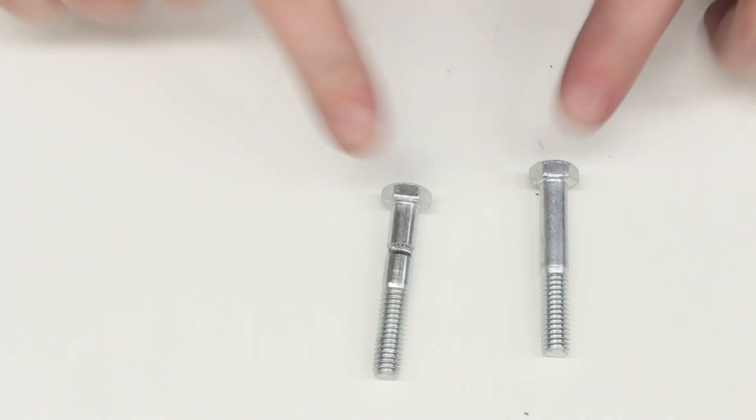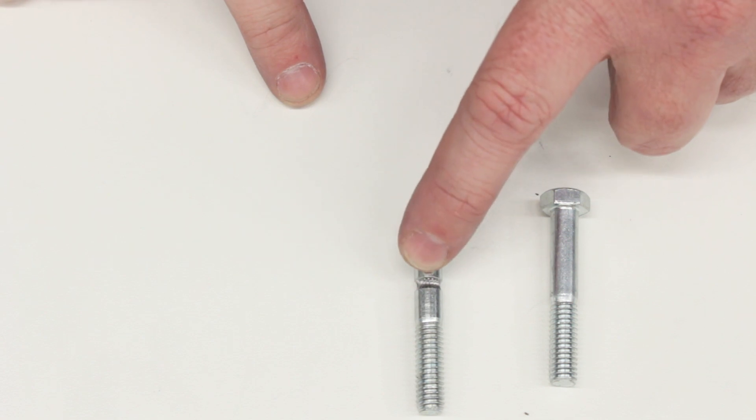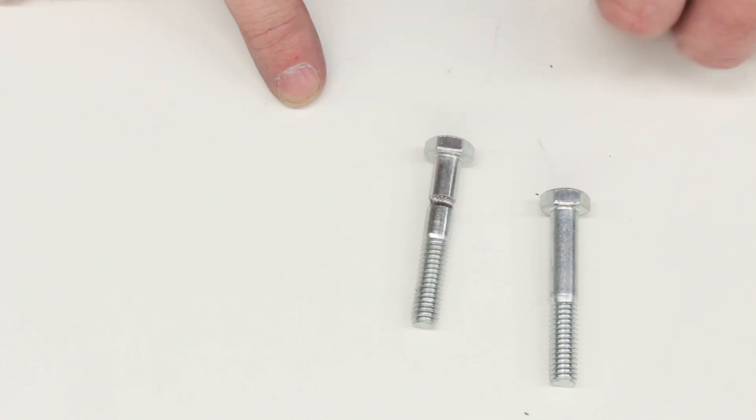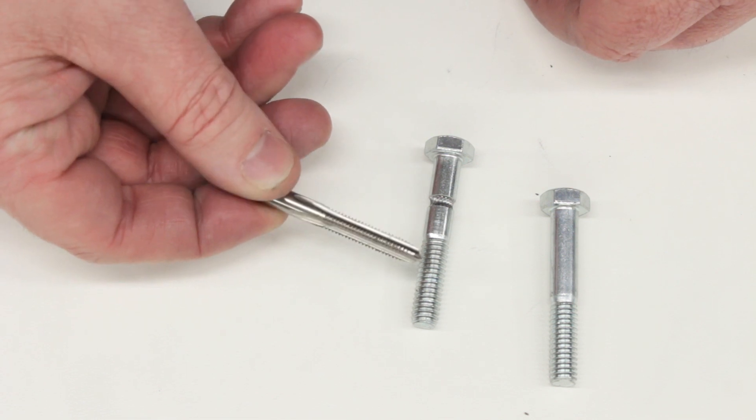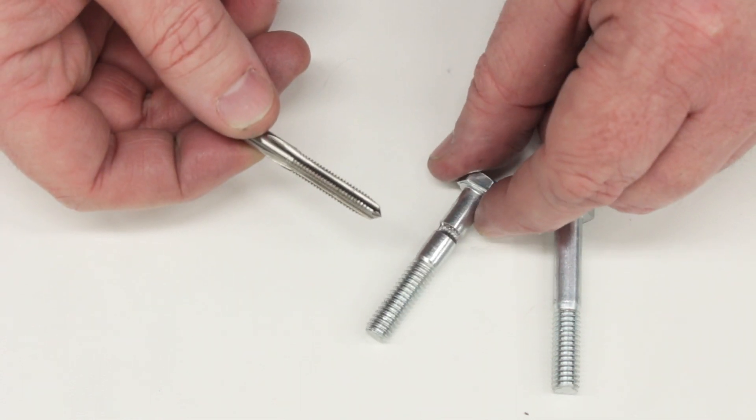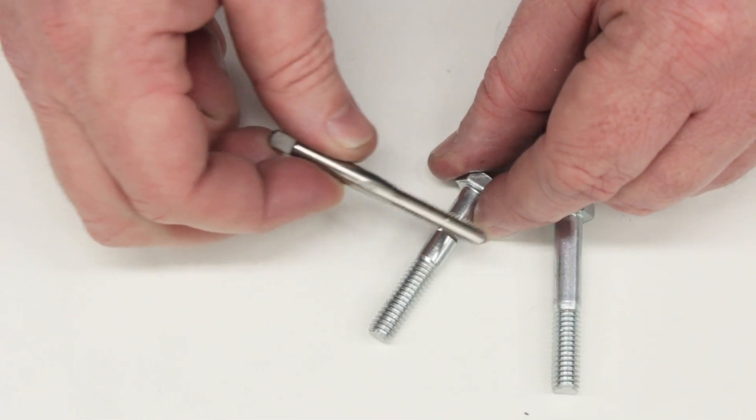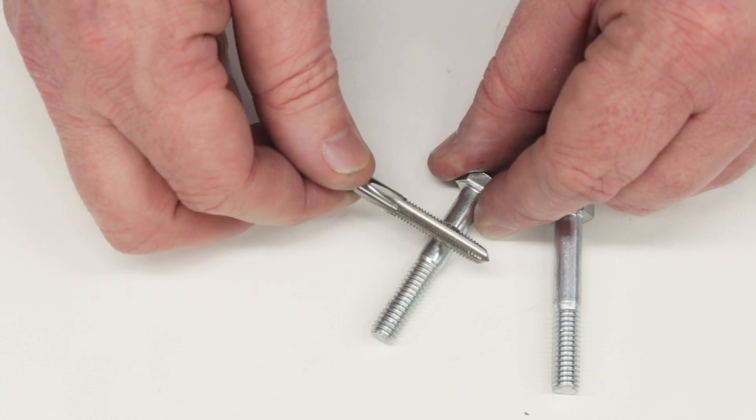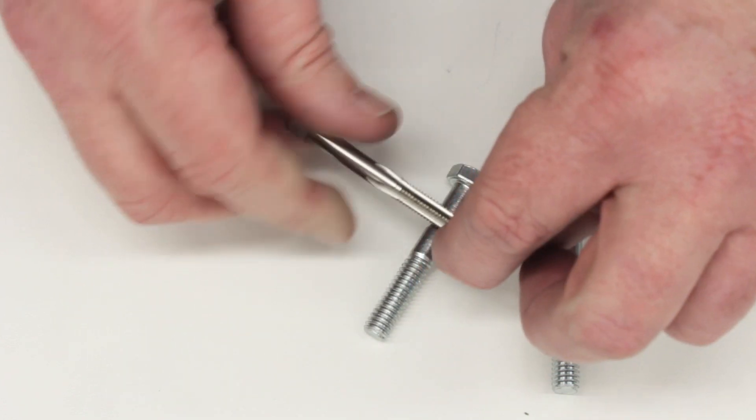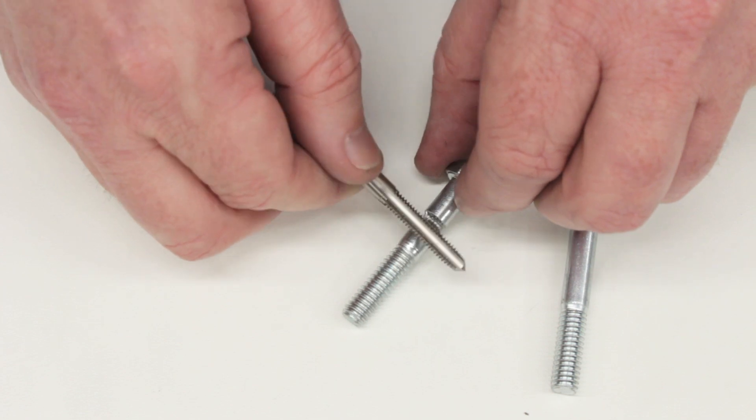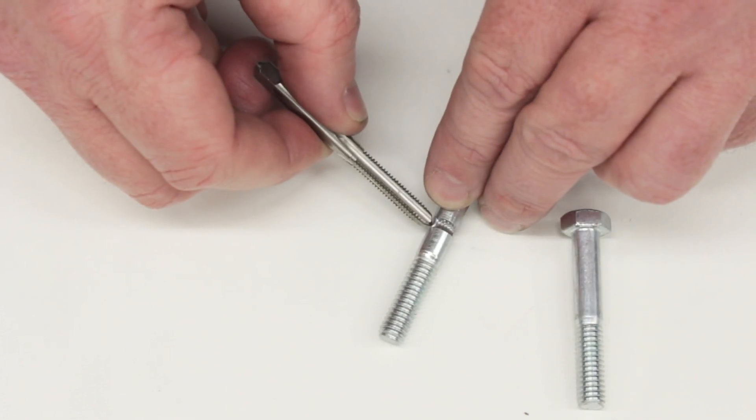So how do you make a hobbed bolt? Well, in the hobby world, when RepRap started out, the most common method for making a hobbed bolt was with a tap. And you would just arrange the bolt in some kind of fixture so it could freely spin, put a tap against the side of it and spin it. And the bolt would rotate and the tap would cut grooves around the bolt.